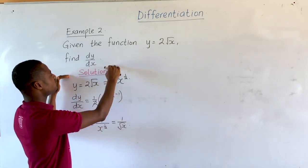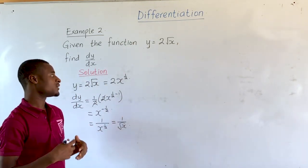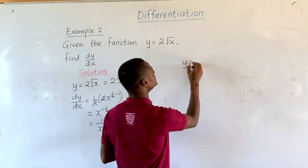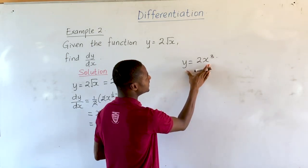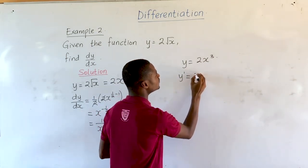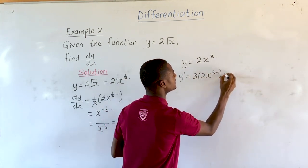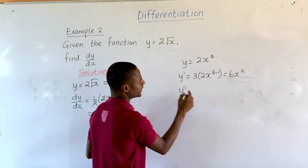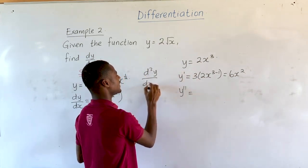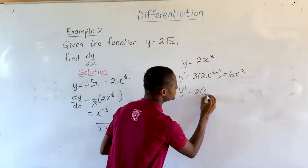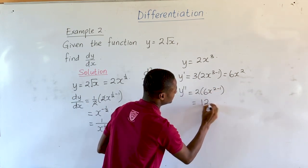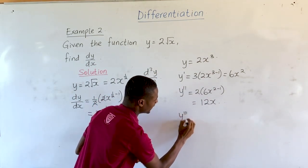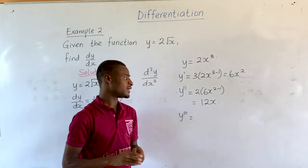Remember that all the derivatives we have obtained so far are first derivatives. We can also obtain the second, third, and other higher derivatives of functions. If we have the function y equal to 2x raised to the power 3, then the first derivative y prime equals 3 times 2x to the power 2, giving us 6x squared. The second derivative, written as y double prime or d²y/dx², equals 2 times 6x raised to the power 2 minus 1, giving us 12x. We can continue differentiating to get y triple prime and so on.